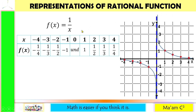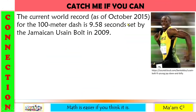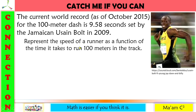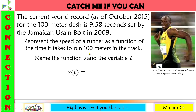A function is used to model or represent a real-life situation. For example, the current world record as of October 2015 for the 100-meter dash is 9.58 seconds, set by Jamaican Usain Bolt in 2009. Let us represent the speed of a runner as a function of the time it takes to run 100 meters. We have s(t), where s represents speed, and from physics, speed equals distance over time. The distance is 100, so s(t) = 100/t.